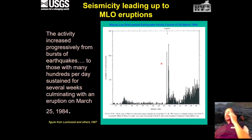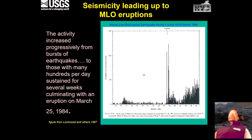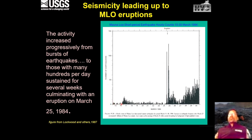Seismicity leading up to the 1984 eruption is shown as hourly counts in the month of March, from March 15th all the way up to the outbreak shown by an arrow. Activity increased from bursts of intermittent earthquakes to a steady stream of many hundreds of earthquakes sustained for weeks prior to the outbreak.